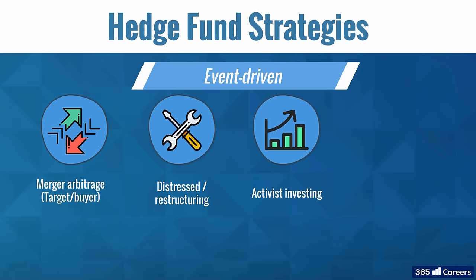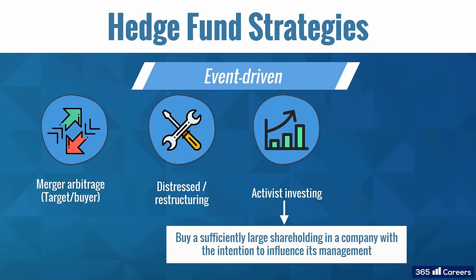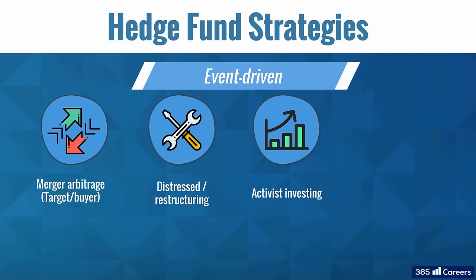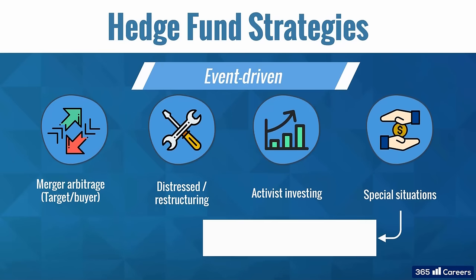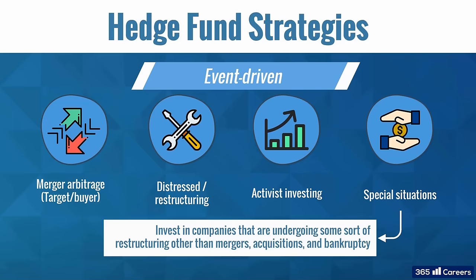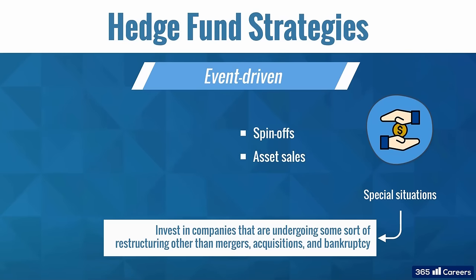Activist investing is another strategy based on triggering corporate actions. Activist hedge funds buy a sufficiently large shareholding in a company with the intention to influence its management. They would require the implementation of various corporate actions and strategies to increase the company's value, including divestitures, restructuring, capital distribution, or changes in management. Activist investing resembles the approach of private equity funds in trying to gain control over a company. However, the key difference is that activist investors focus on public companies. Lastly, special situations funds invest in companies undergoing some sort of restructuring other than mergers, acquisitions, and bankruptcy, such as spinoffs, asset sales, and share buybacks.